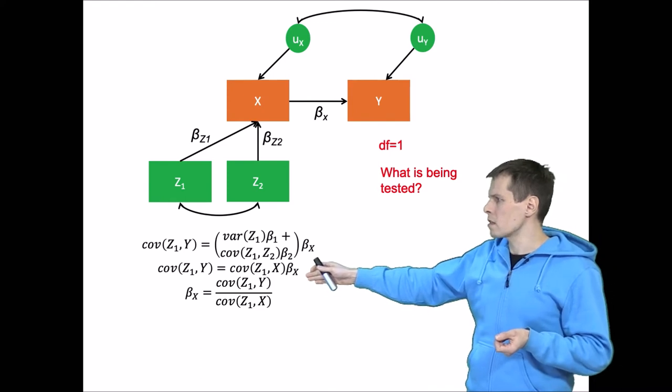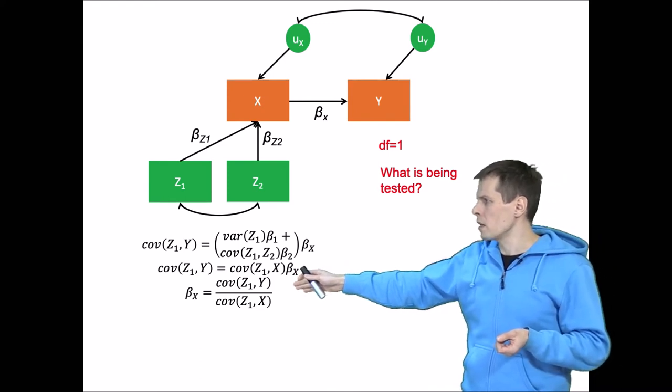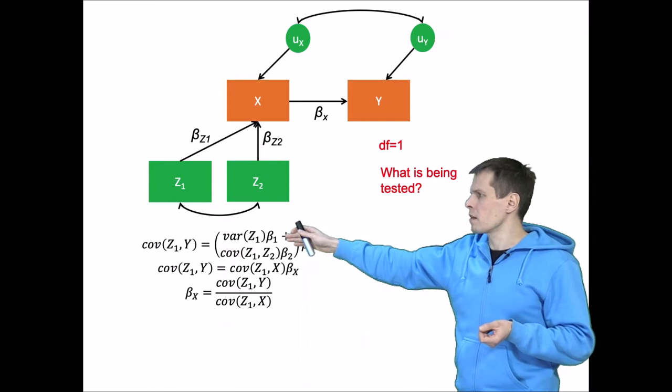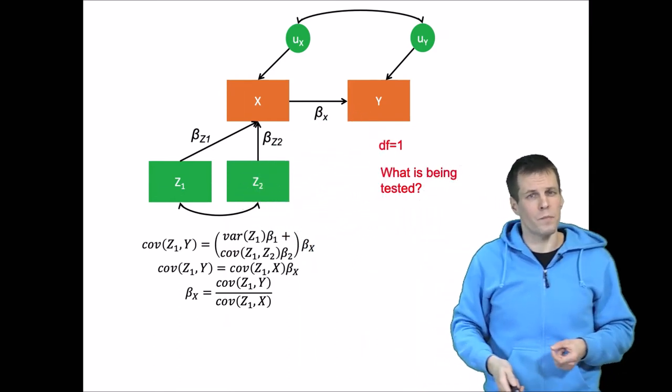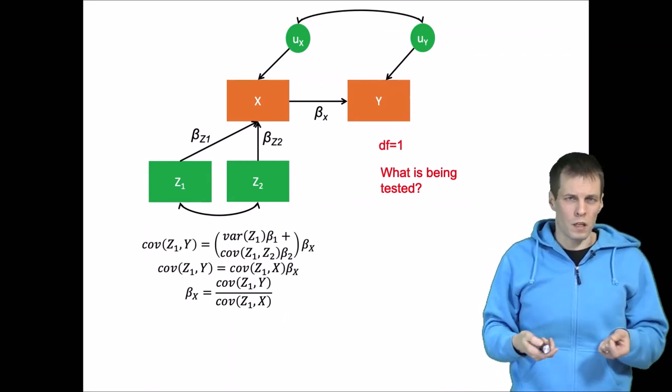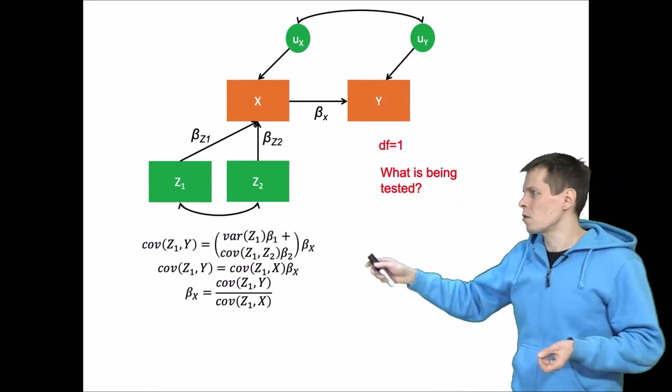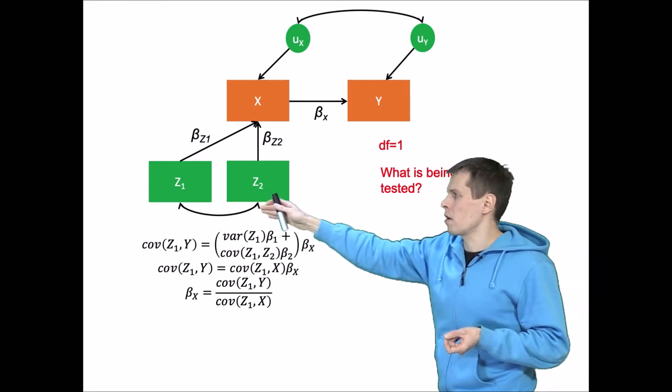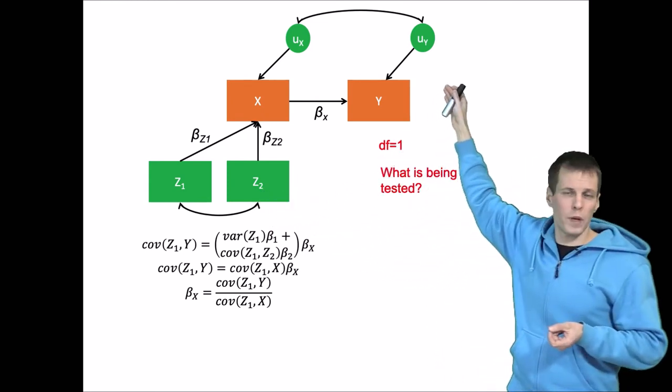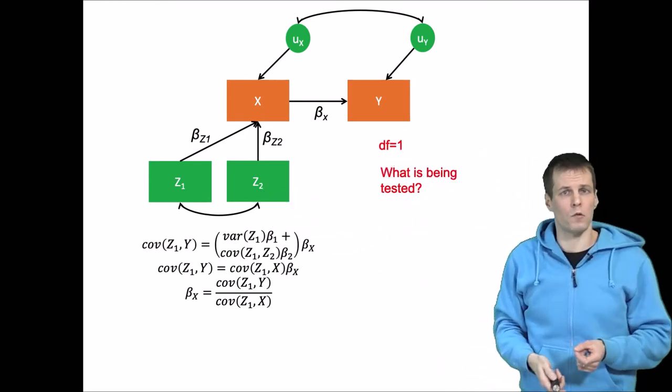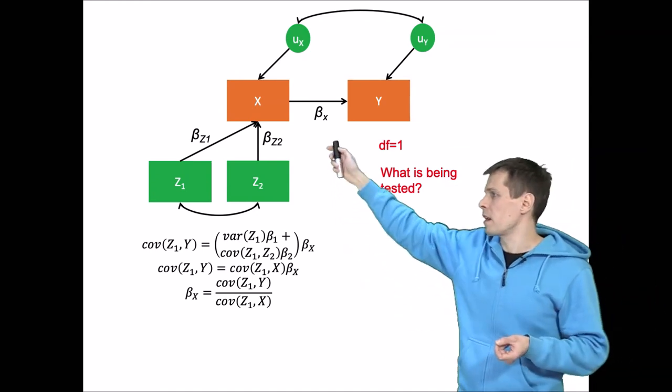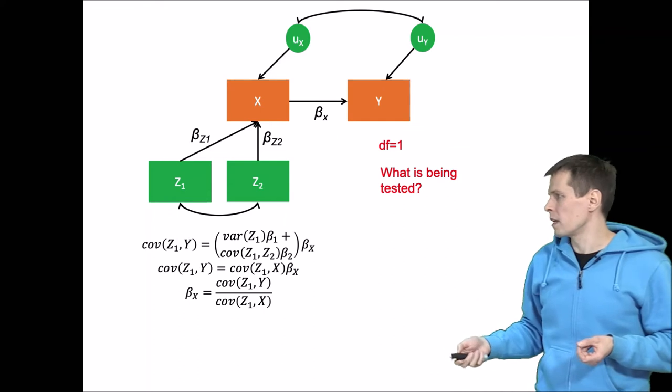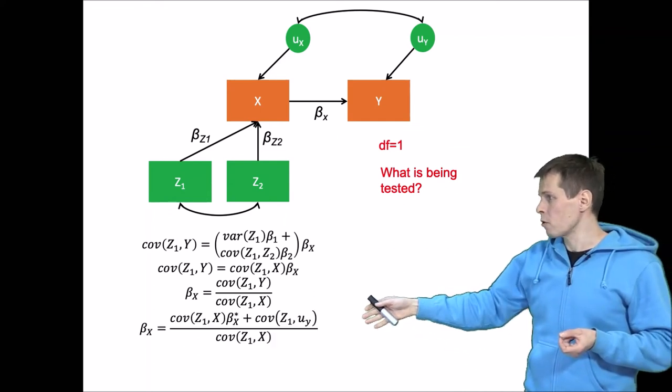So covariance between Z1 and Y is simply the model implied covariance here if the model is correctly specified. Let's assume that our model is misspecified so that Z1 actually correlates with UY. So that would be a violation of the exclusion criteria. And let's call the correct population value beta star. So we get that kind of equation here.